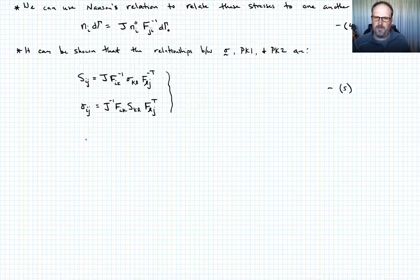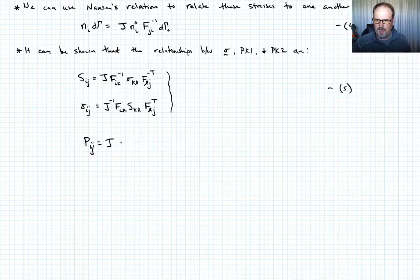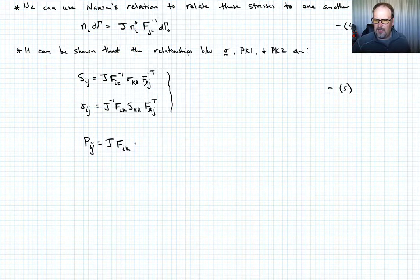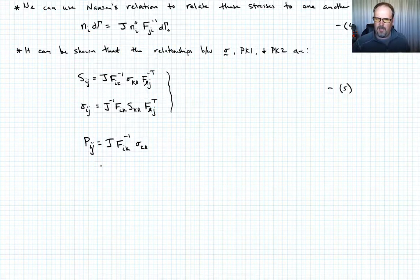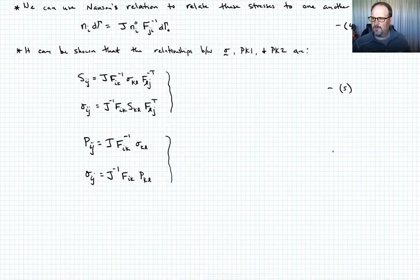If we want to now get the nominal stress P and we have the Cauchy stress, we would say that P_ij equals J times F_IK inverse times sigma_KL. And if we wanted to get back, we would say then that sigma_IJ equals J inverse times F_ik times P_KL. Call those equations six.